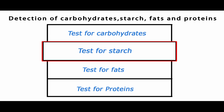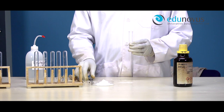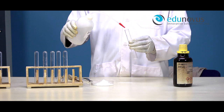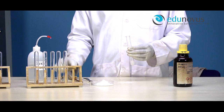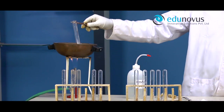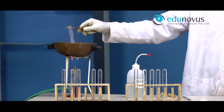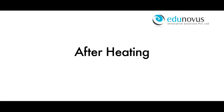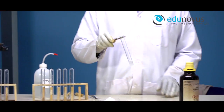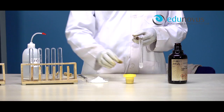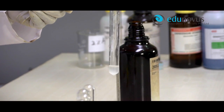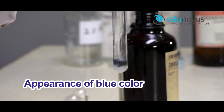Test for starch, also known as the iodine test. Take a small amount of the given food compound and add few drops of distilled water. Heat it on a water bath to get an aqueous solution of the food compound. Now add few drops of iodine. The appearance of blue colour indicates the presence of starch in the given food compound.